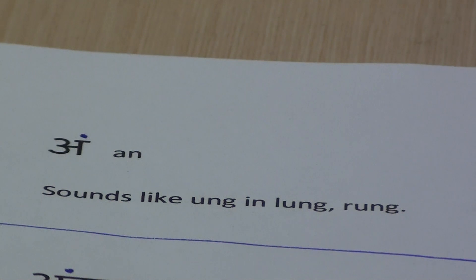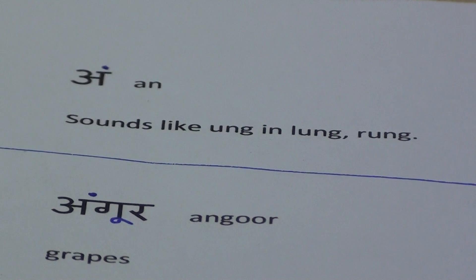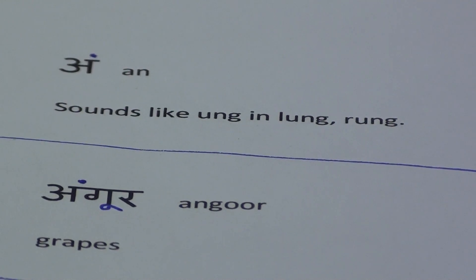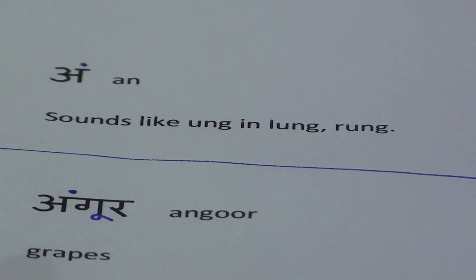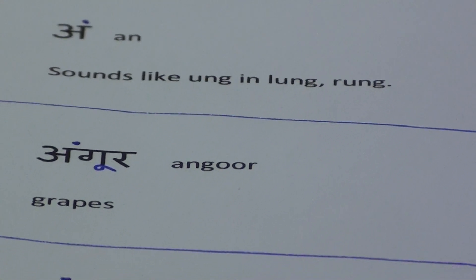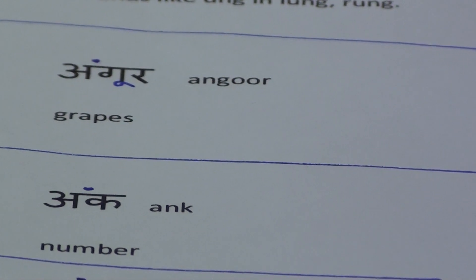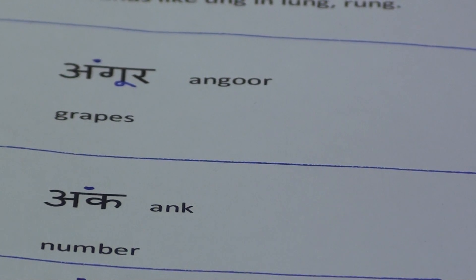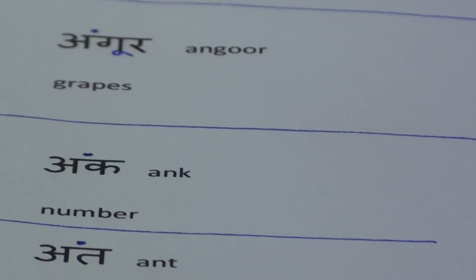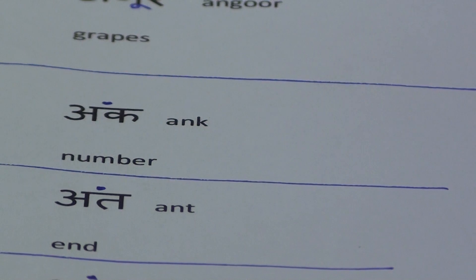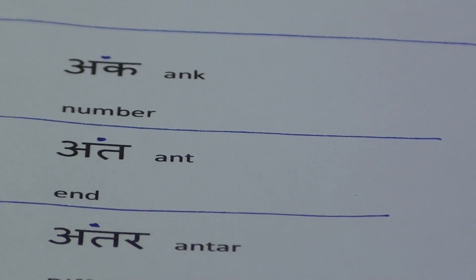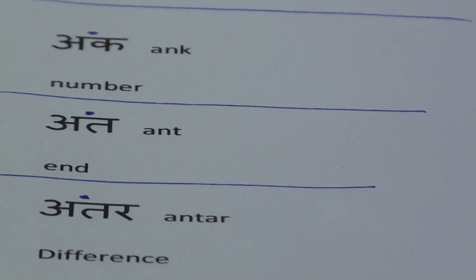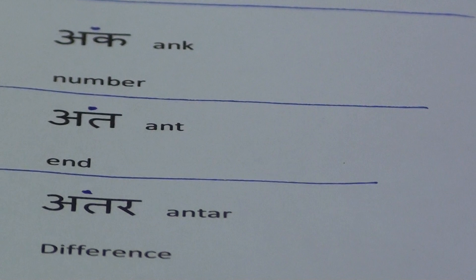Now we will see some words which have Ang. Angoor means grapes. Ang means number. Ant means end. Antar means difference.